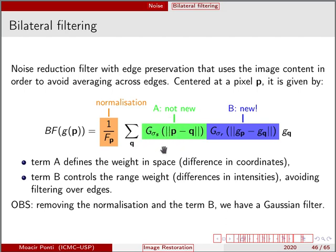So this is basically a Gaussian filter. But in here we have something that's trying to also make the Gaussian filter so that the actual G of P is similar to the value of Q. So the term A defines the weight in space, so the difference in coordinates, while the term B controls the range weight, the difference in intensities, avoiding filtering over edges.